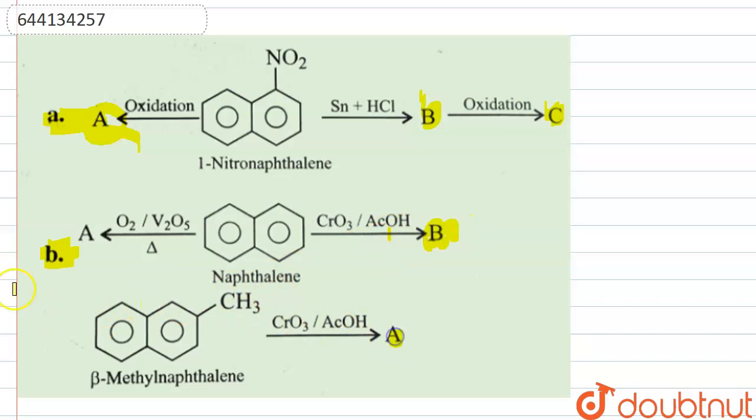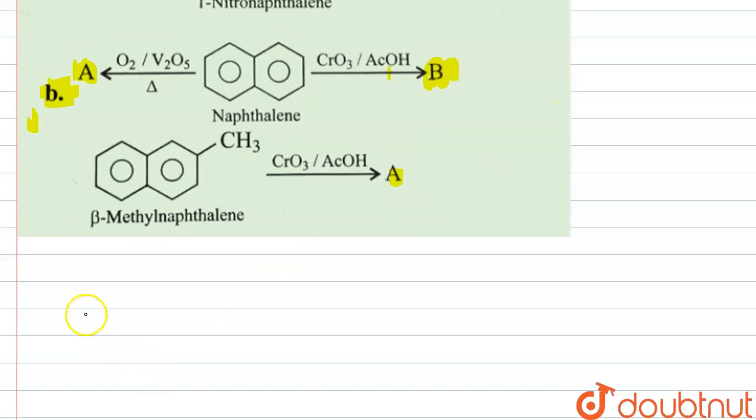If we see the first case, in the very first reaction, 1-nitronaphthalene is being oxidized. Now this nitro group is an electron-withdrawing group, so it stabilizes this ring. This ring is stabilized and resists oxidation, whereas the second ring will be oxidized.